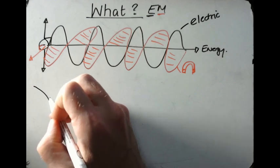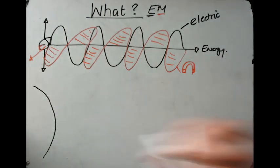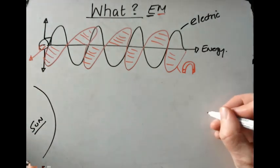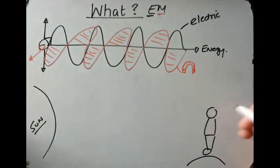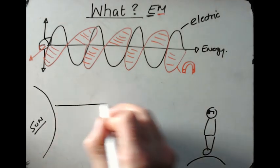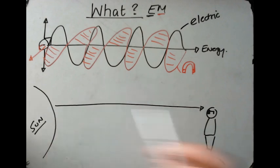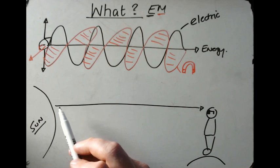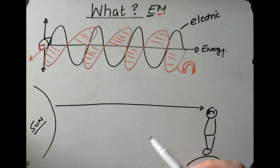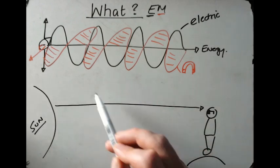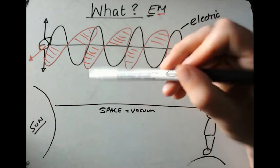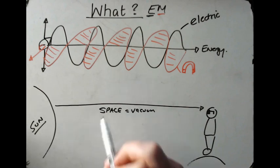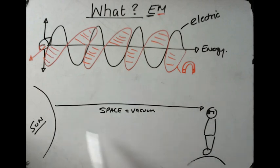Whereas an electromagnetic wave does not need a medium to travel through. Here's the sun — it gives out EM waves — and here's a person looking out towards the sun. We can see the sun because light travels from the sun into our eyes in straight lines. Between the sun and us is space, and space is a vacuum. So one thing you need to know about EM waves is that they can travel through a vacuum — they do not need particles or a medium.